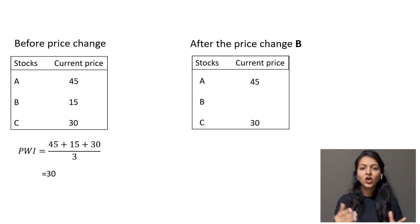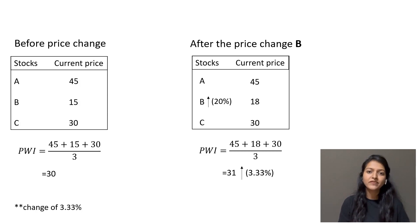It rises by 10%. On the other hand, if B rises by 20%, same as A, which comes to 18, index value changes to 31. It rises only by 3.3%.